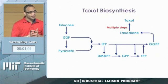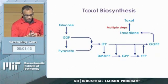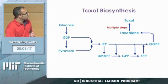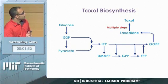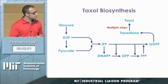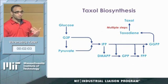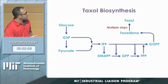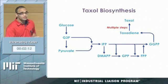When I started my PhD, I was assigned a very simple task. What had already been achieved in our lab was the production of taxadiene through the non-mevalonate pathway — essentially central metabolism feeding into the non-mevalonate pathway that produces precursors for isoprenoids or terpenoids. Then the cyclization of geranylgeranyl pyrophosphate gives you the first precursor to taxol, which is taxadiene.